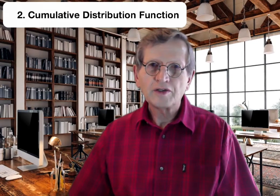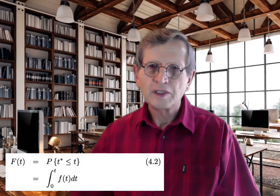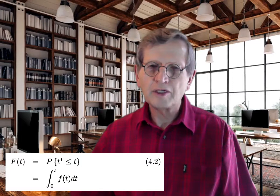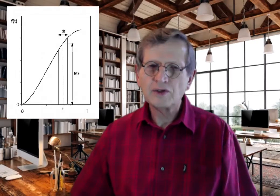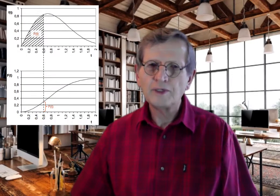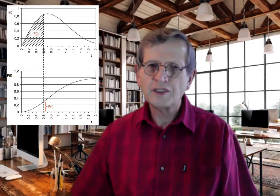The cumulative distribution function F(t) is defined as the cumulative probability that failure will take place before or at time t. In other words, it is the probability that the time of failure t* will fall within the interval zero to t. This is calculated through cumulatively summing up the area under the density function, as shown in the figure.